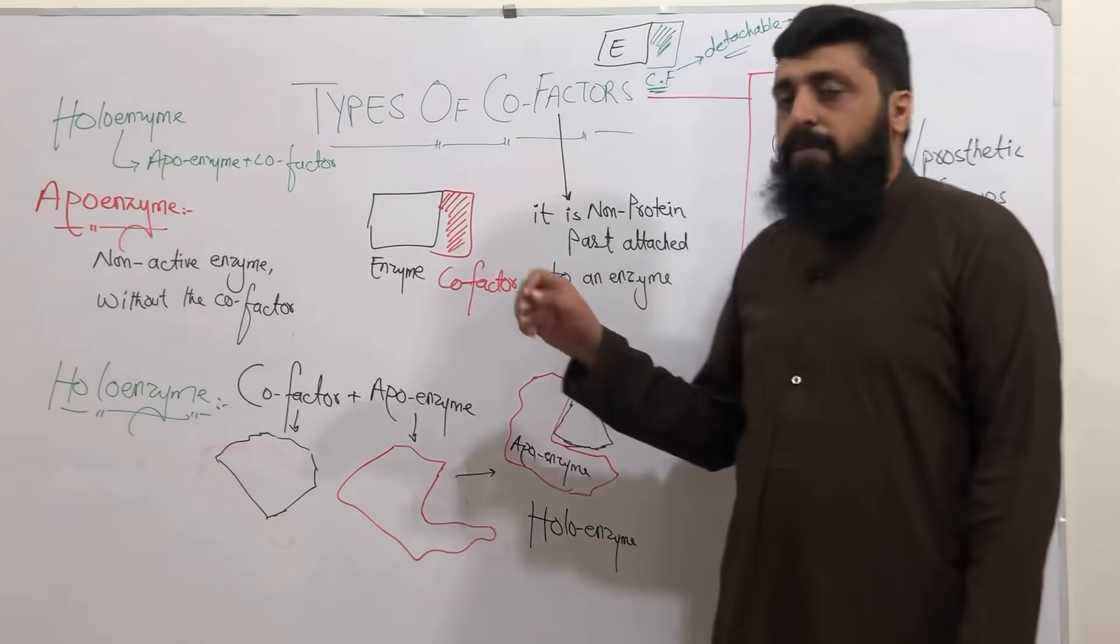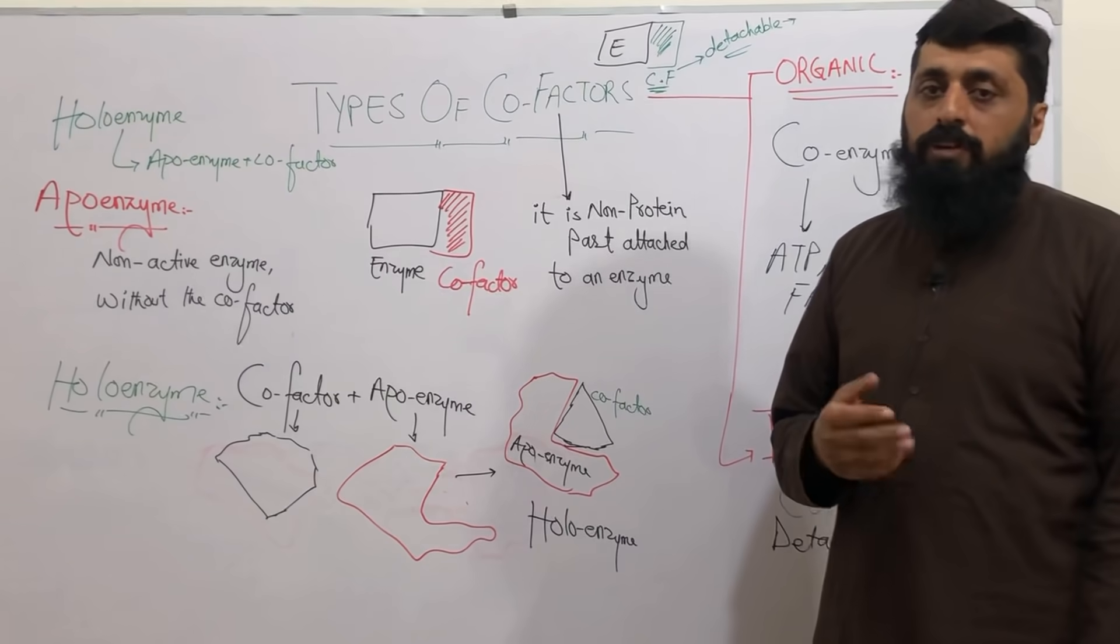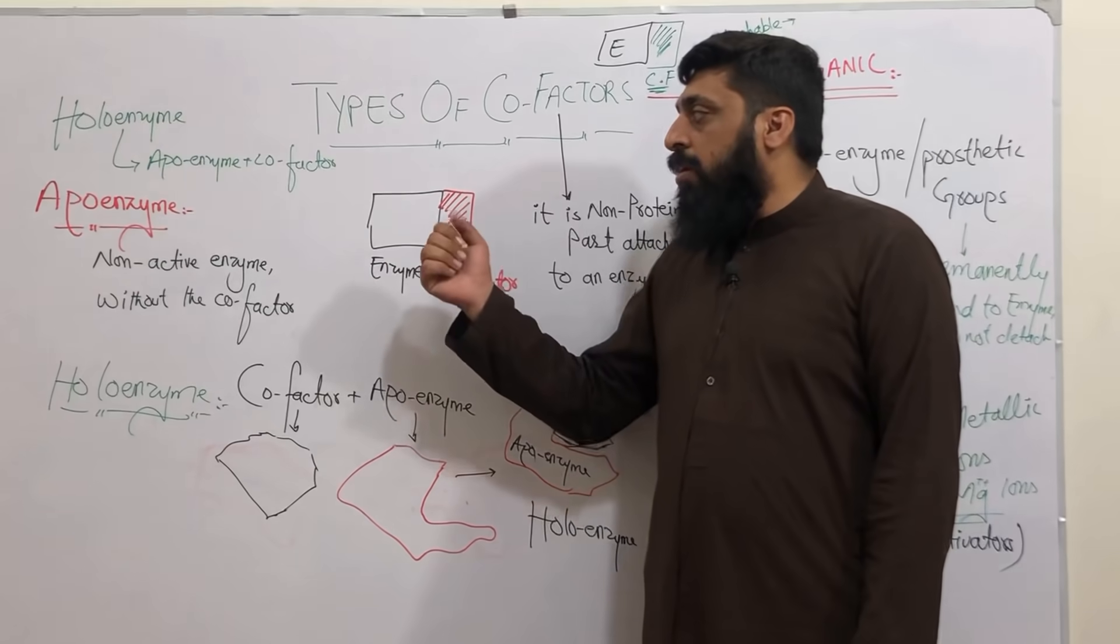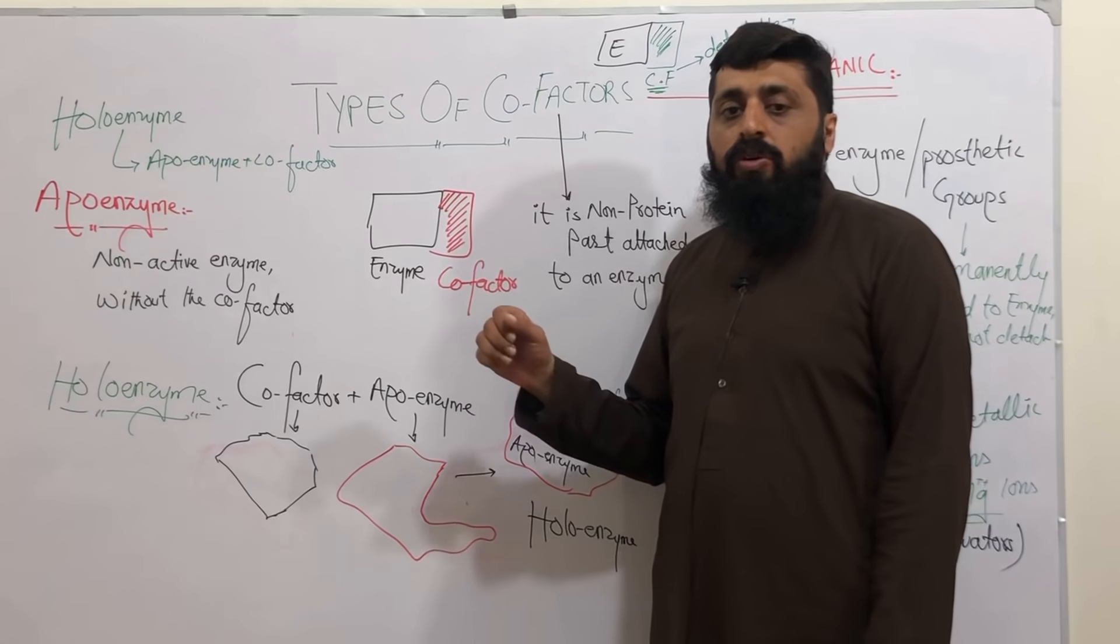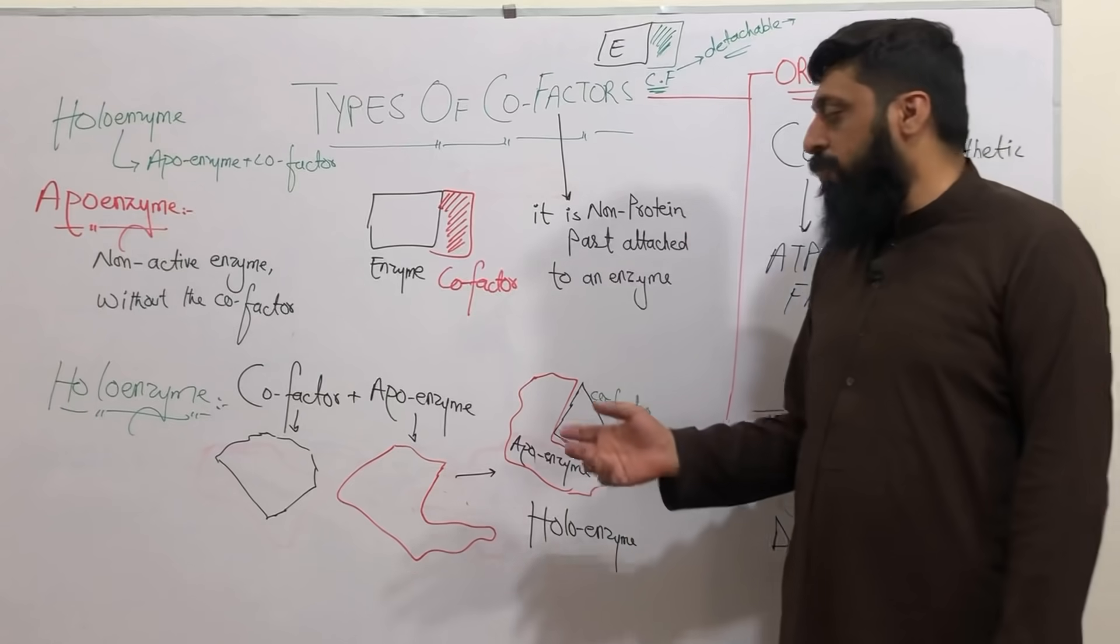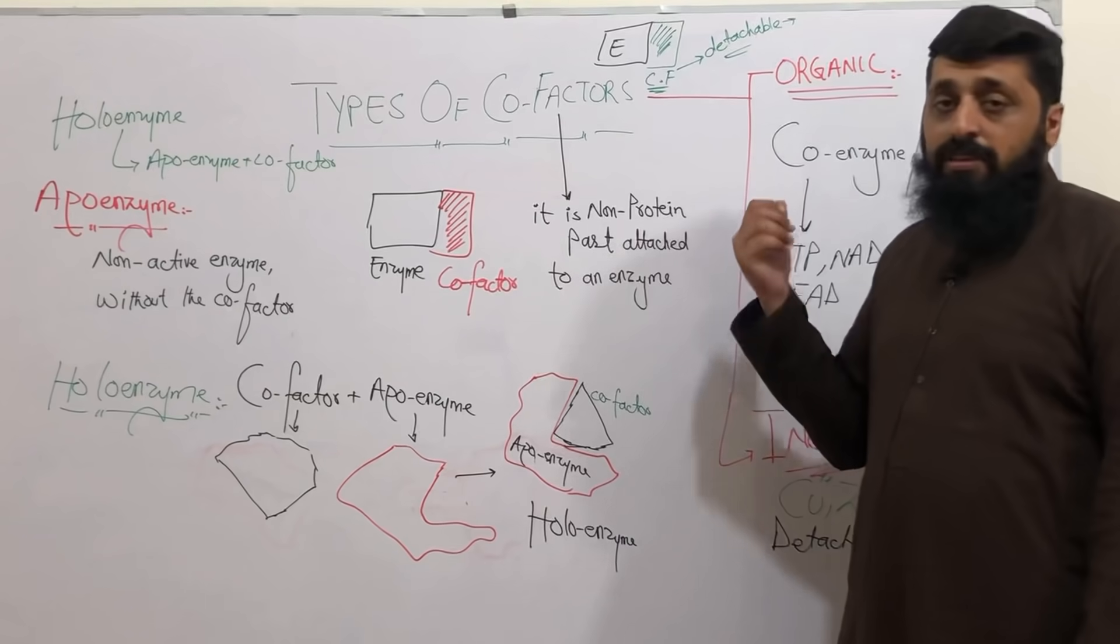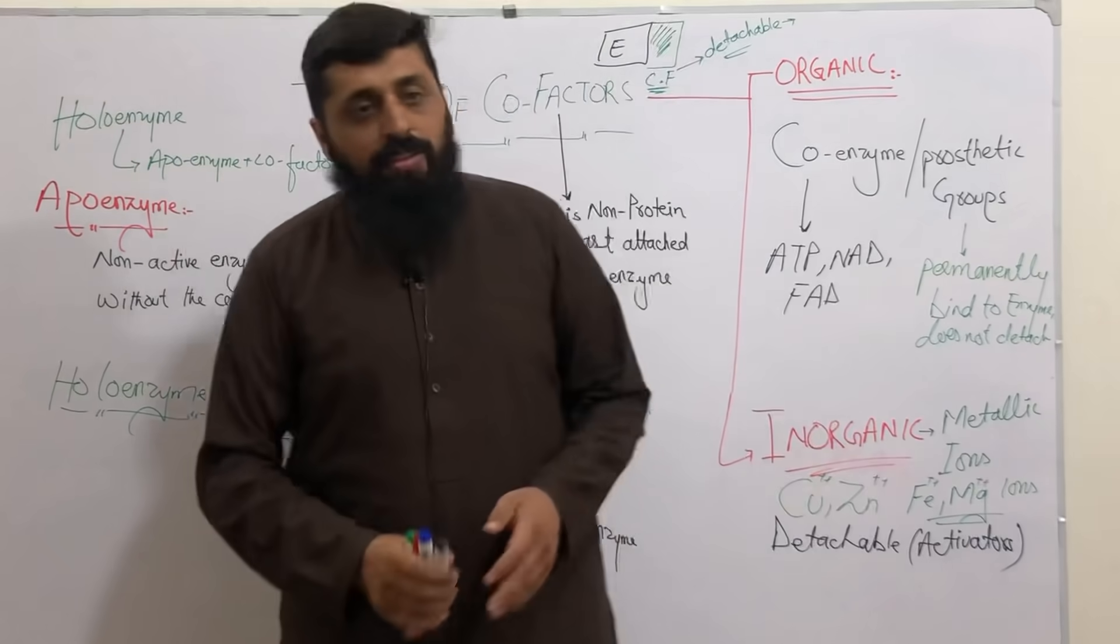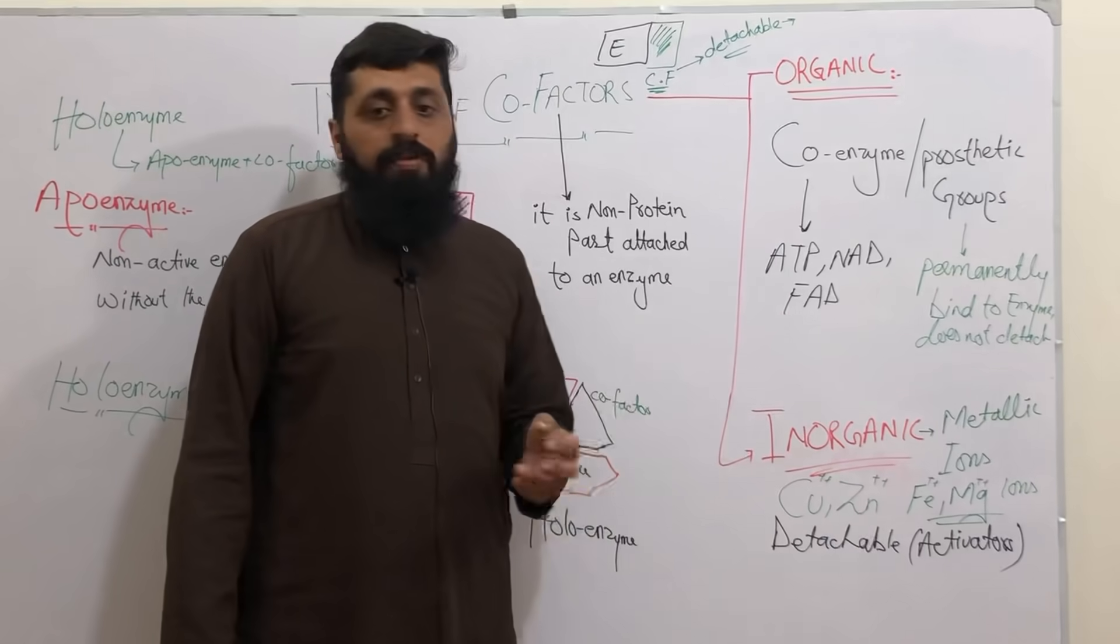Back to the cofactor - cofactor is basically the non-protein part that joins with the enzyme, the functional protein, so then it is a functional enzyme. When we talk about apoenzyme, it's the non-active enzyme without the cofactor. Holoenzyme is the protein part plus the cofactor, and it is a functional enzyme. Getting back to the categories: organic and inorganic cofactors, some are metallic ions, and we also have ATP, NAD permanently attached.